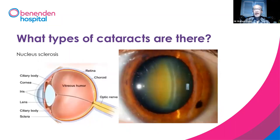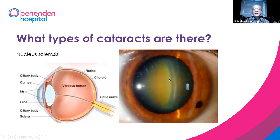So what types of cataracts are there? The commonest type is nuclear sclerosis. As you can see in the diagram, there is a yellowish colour in the lens which progressively gets denser in the centre. This is more common with age-related ageing changes of the lens.